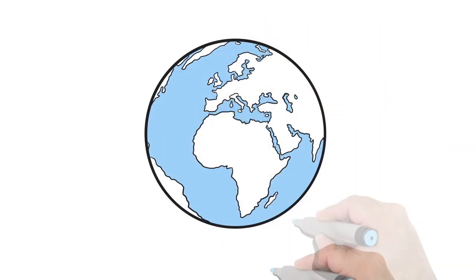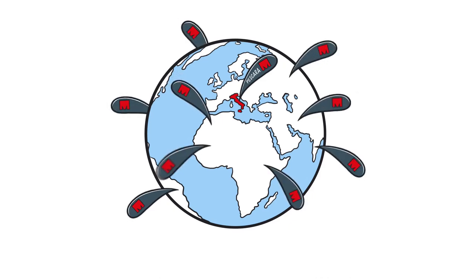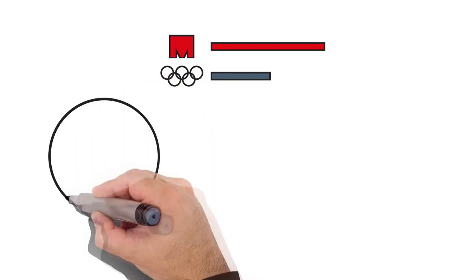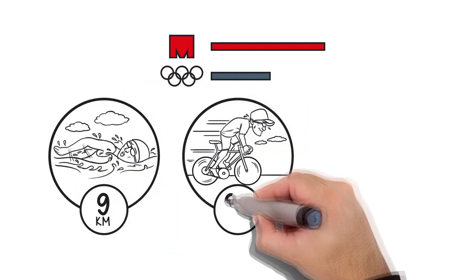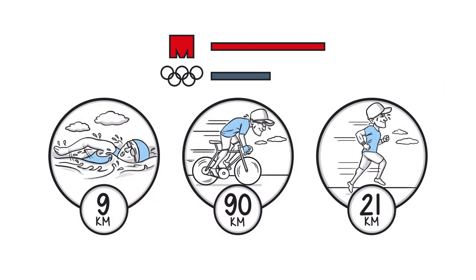The Ironman is an international triathlon course that takes place every year around the world, which is more grueling and longer than the Olympic Triathlon: 1.9 km swimming, 90 km of cycling and 21 km of running.